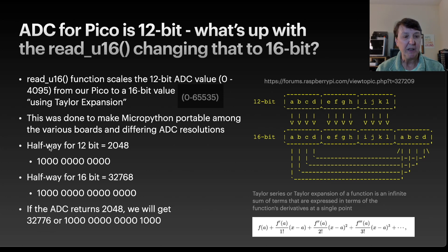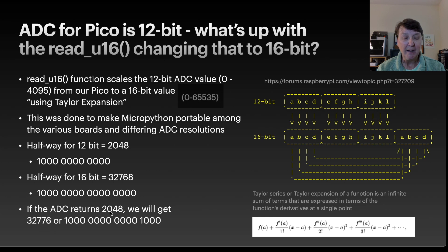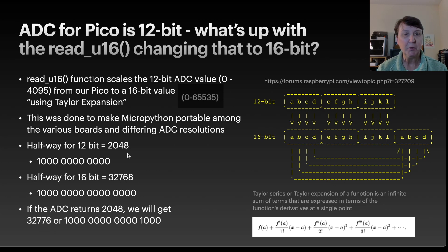I did a little thought experiment: halfway in 12-bit is 2048, which in binary is a one followed by all zeros. Halfway in 16-bit follows the same concept. But if you do the math using this bit-copy approach with 2048 as input, you actually get 32,776 in decimal - not exactly halfway. So it is an approximation used to do the scale-up, and that could be a small reason why we might have some noise when using this ADC.